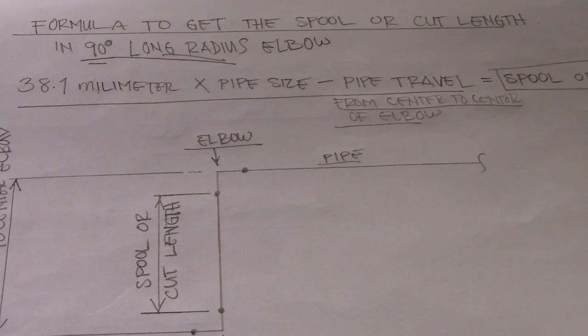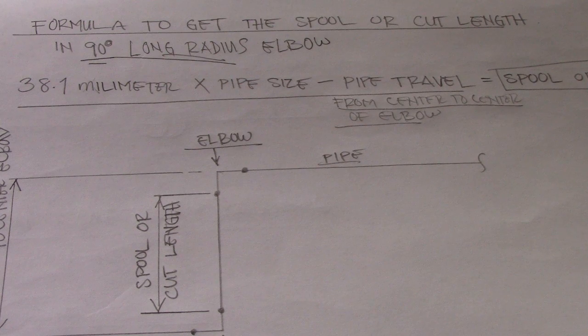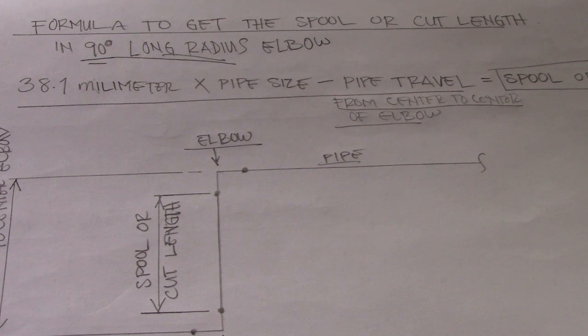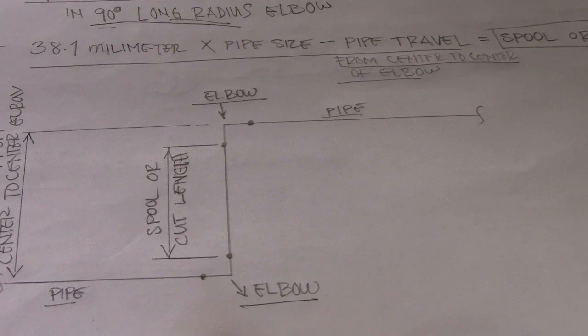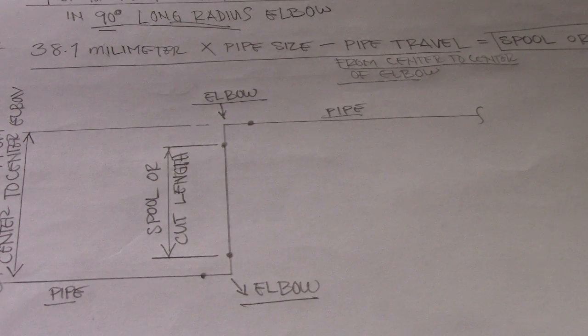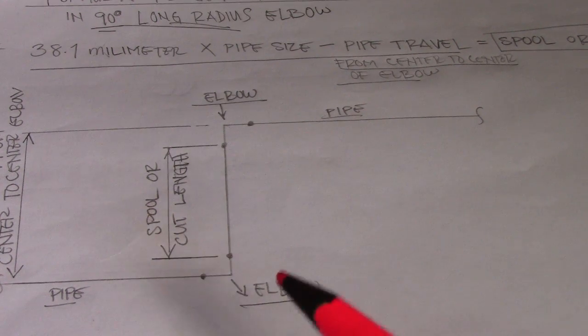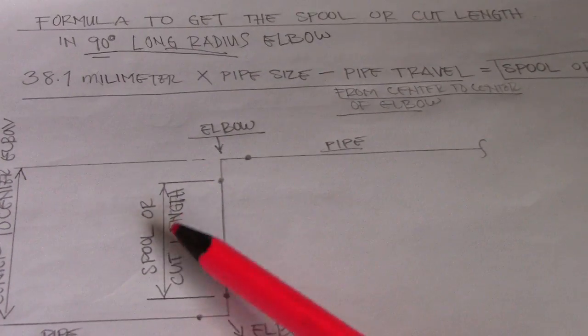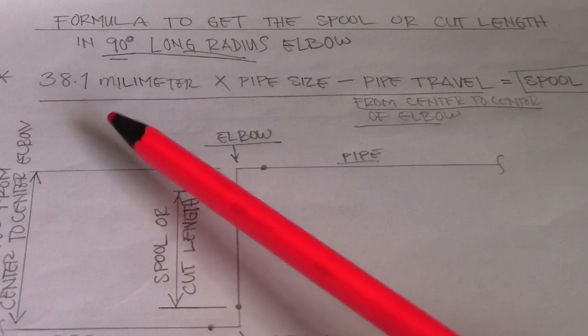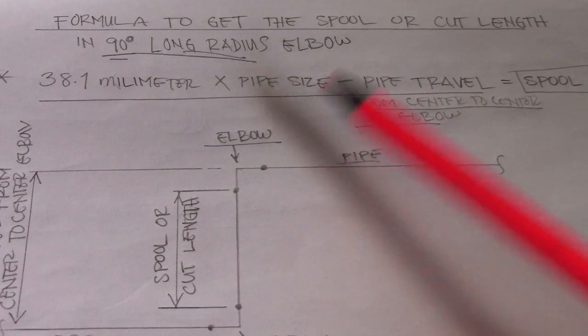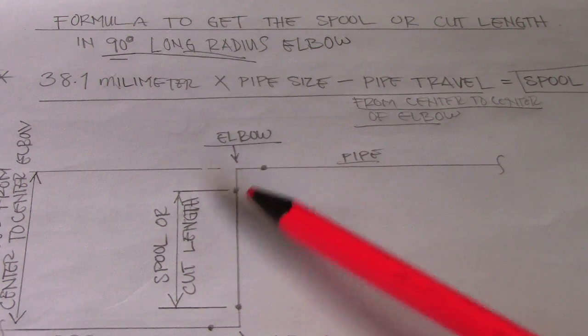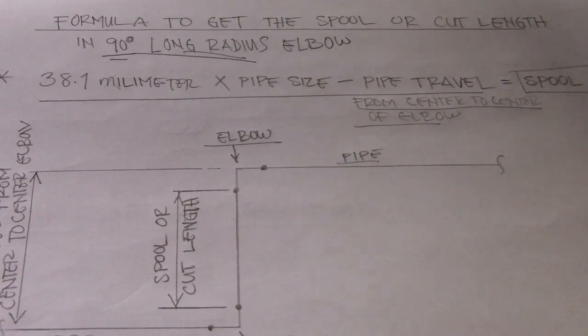Multiply it to pipe size. The example pipe size is 10 inch, 12 inch, just multiply it to 38.1 and then that equals the take off. If we have two elbows here, just multiply it to two because we have two elbows. So 38.1 multiply it to pipe size equals take off. This is for one elbow and then we have two elbows, just multiply it to two.